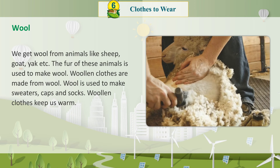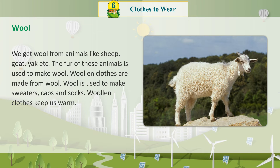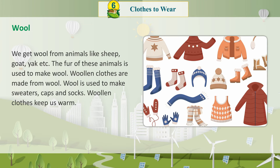Wool: We get wool from animals like sheep, goat, yak, etc. The fur of these animals is used to make wool. Woolen clothes are made from wool. Wool is used to make sweaters, caps and socks. Woolen clothes keep us warm.